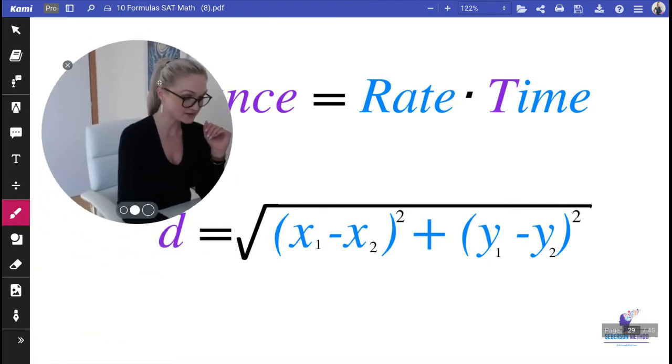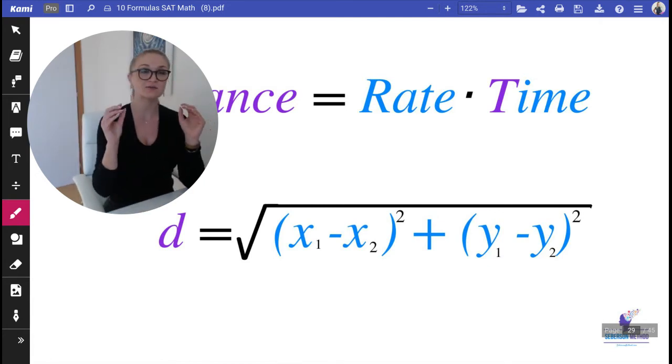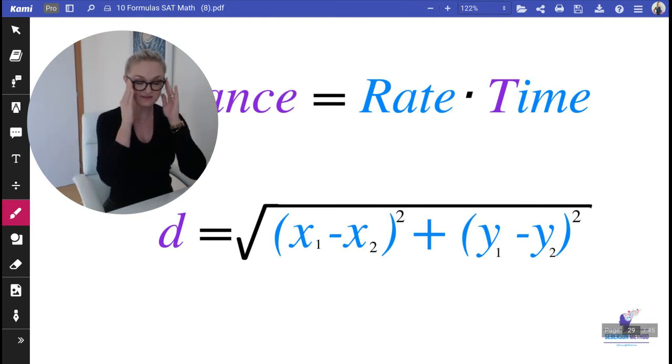distance formula, you need to know this: distance equals the square root of (x₁ - x₂)² + (y₁ - y₂)². Those are just coordinates. Let's say you need to find the distance between two coordinates. Here's a hint I give my private clients: whenever you see a coordinate plane with a circle or triangle on it, immediately remember your distance formula.